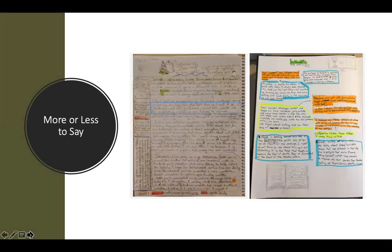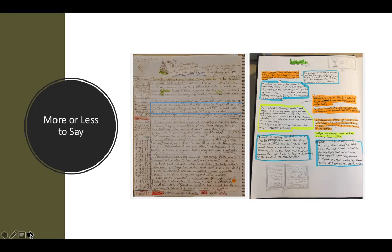Some students had more or less to say about a particular reading. We set a minimum of 200 words and said each drawing they included could count for 20 words. Some students wanted their word count at a minimum and mostly wanted to draw — that was fine. You can see how students connected with the reading based not only on what they said, but also on the quantity. A student who spent a lot of time doing a drawing and really pulling from the text was clearly very engaged with that reading.